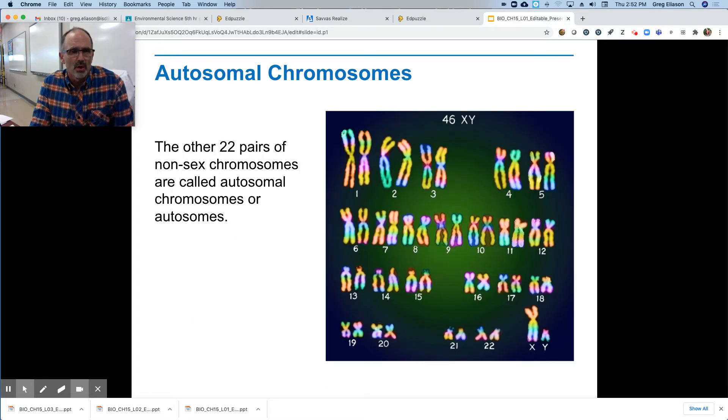So what we call that is those are the sex chromosomes. So here's our sex chromosomes. And the rest of the 22 pairs are called autosomes, autosomal chromosomes or autosomes. So we can have an autosomal disorder or a sex chromosome disorder.